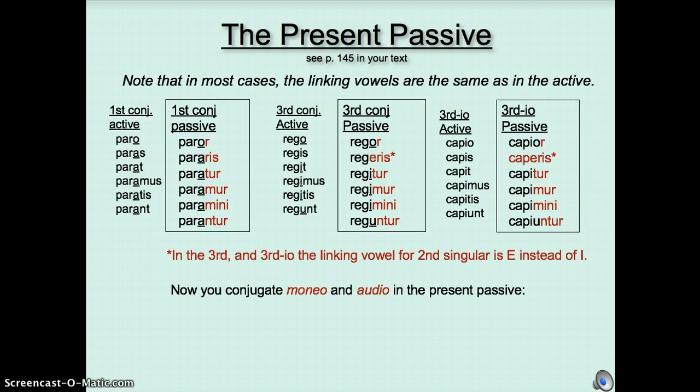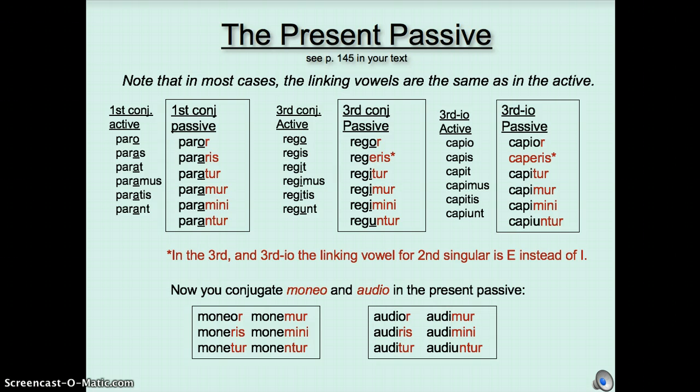Now you try moneo, and then audio in the present passive. Stop the video if you want to have more time. Monior, moneris, monetur, monemur, monemini, monentur. And then here's audio. Audior, audiris, auditur, audimur, audimini, audiuntur. Notice that iris.